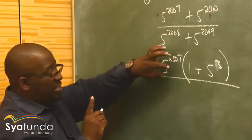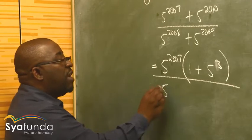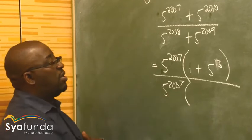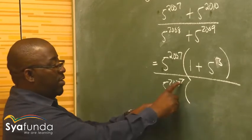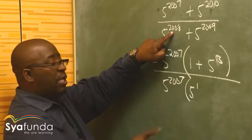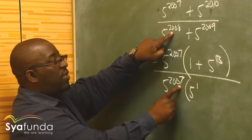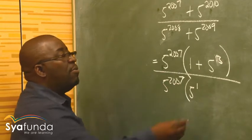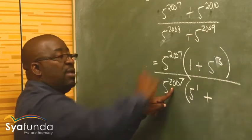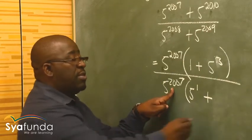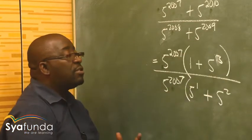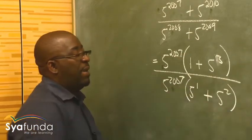Remember that we're taking the smallest, which is 5 to the power 2007. We've got 2007 but 2008 in the denominator, so I'm short of 1 — that's 5 to the power 1. So 1 plus 2007 gives us 2008. Plus, we've got 2007 here but 2009 there, so we're short of 2. In this case we're going to have 5 to the power 2, because 2 plus 2007 gives us exactly 2009. So this balances out.